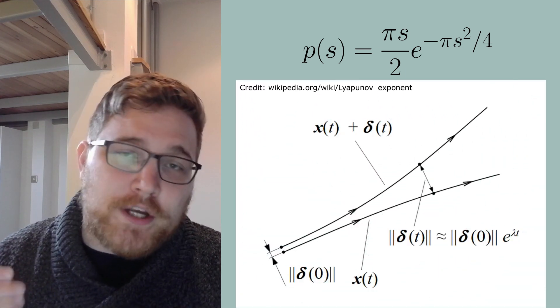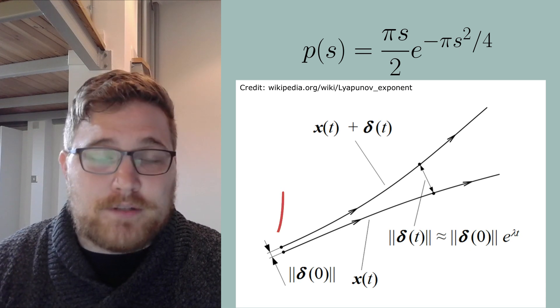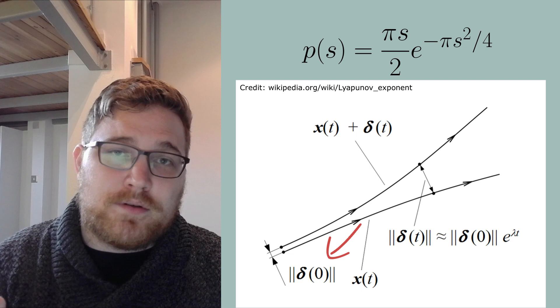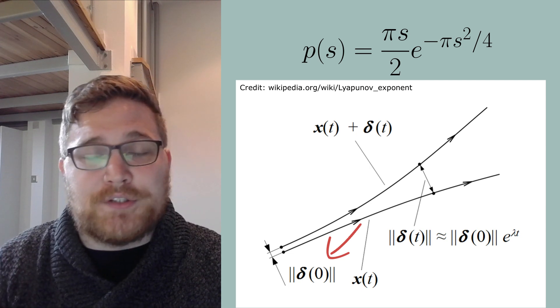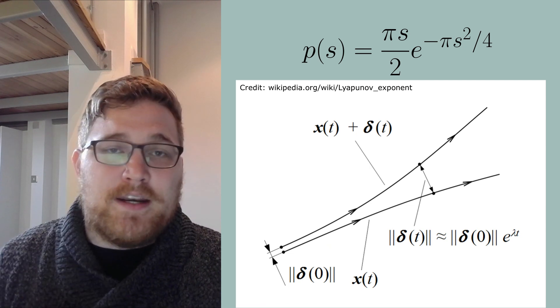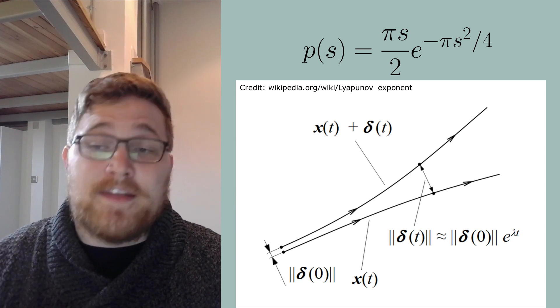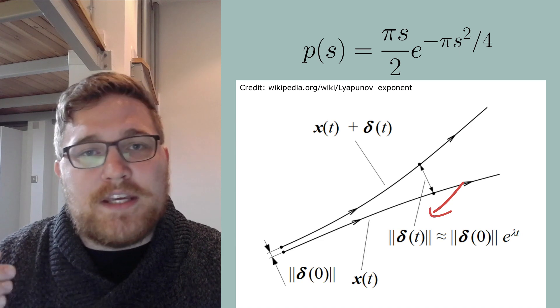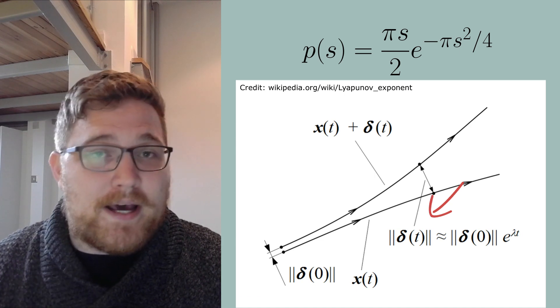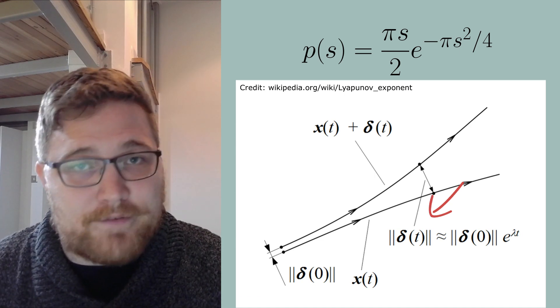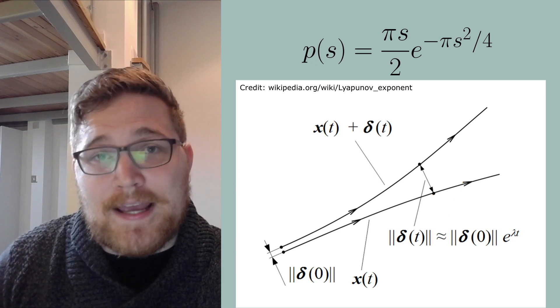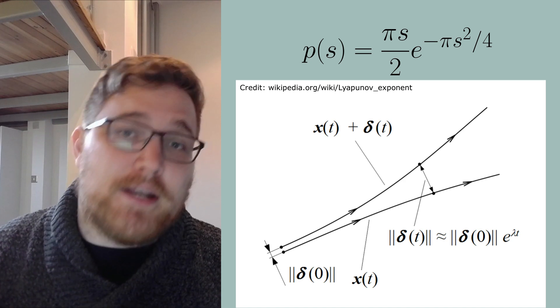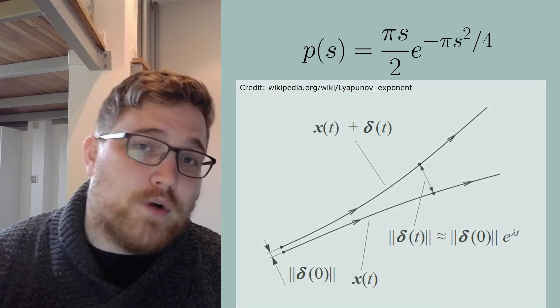Consider that we have two initial conditions for some system that are slightly different, say by some amount delta. And we'll make delta a function of time, so we'll put a little zero there. Then if we vary time and the dynamics are chaotic, delta of t, or the difference between the two paths, exponentially diverge from each other. Lambda is a positive constant called the Lyapunov exponent that controls this exponential sensitivity to initial conditions.